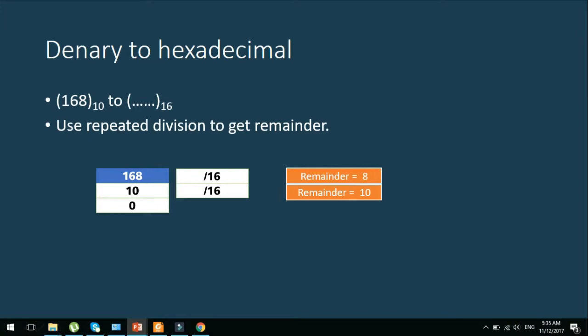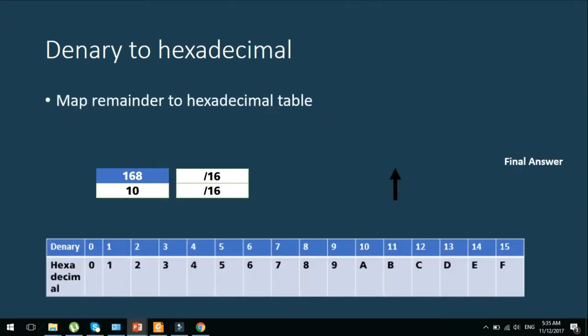In this case, we start with mapping the remainder to the hexadecimal table as you can see now. And this is where you'll have your final answer. So for the remainder 10, you just need to map it to the hexadecimal. For this, we get an A.